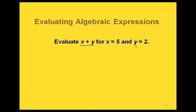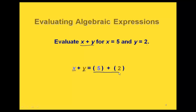And we replace y with 2. So x plus y becomes 5 plus 2. Then we find the value — that's the evaluation part. In this case, 5 plus 2 gives us 7.